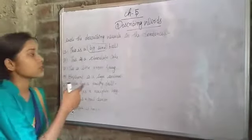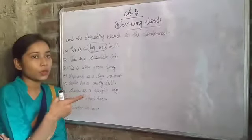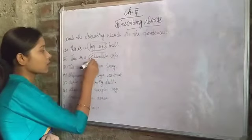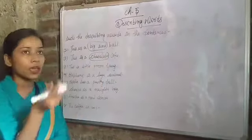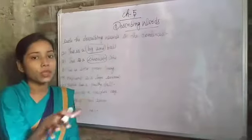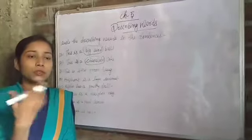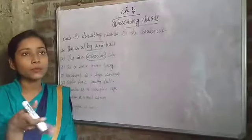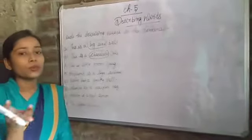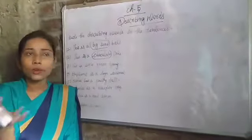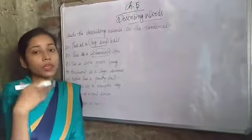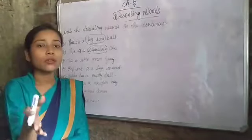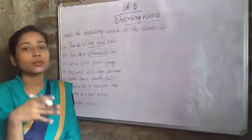This is a chocolate cake. In this sentence, we have the word chocolate. When we say this is a cake, it simply refers to any cake — strawberry cake, red flavor, chocolate one, vanilla one. We don't know what kind of cake. But when we say this is a chocolate cake, we get to know the variety of our cake.